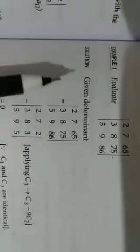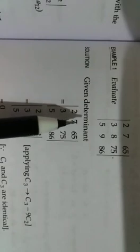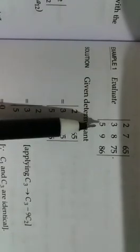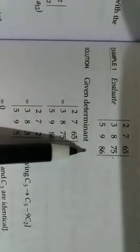We are given the determinant: evaluate 2, 3, 5, 7, 8, 9, 65, 75, 86. Now what we have to do? Our main aim is how we will arrange any row or column.